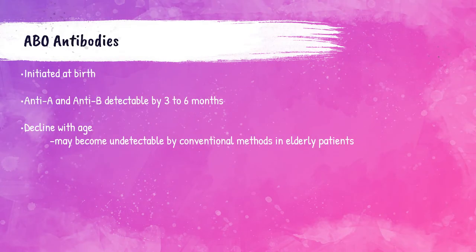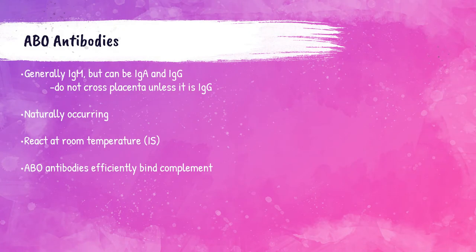Antibodies in the ABO blood group system are naturally occurring. They are initiated at birth but are not detectable in the serum until around three to six months of age, and they also decline with age. In elderly patients, anti-A and anti-B antibodies may become weaker or may not be detectable in the serum. ABO antibodies are generally IgM and they activate complement, reacting at room temperature and generally giving strong reactions of 4-plus during ABO testing. ABO antibodies can also be IgG, which can cross the placenta, but predominantly they are IgM.